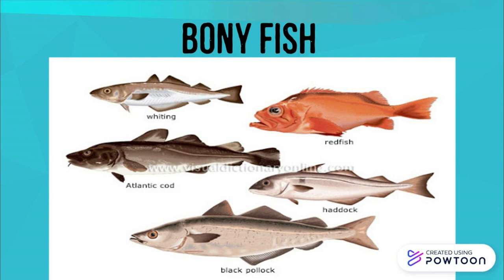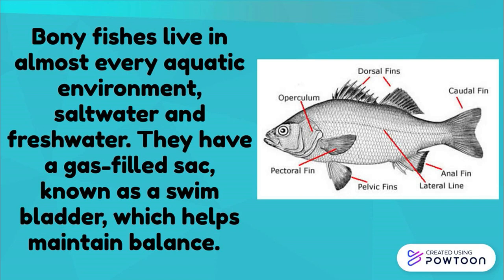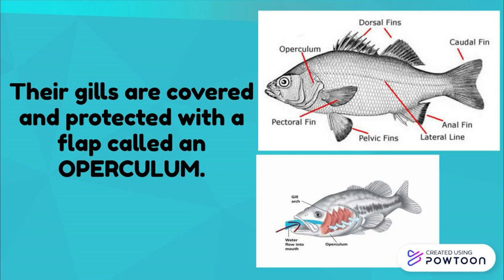Bony fish are the most diverse of the fish groups. Most familiar fishes belong to this group, such as milkfish, tilapia, and salmon. Bony fishes live in almost every aquatic environment — both saltwater and freshwater. They have a gas-filled sack known as a swim bladder, which helps maintain balance. Their gills are covered and protected with a flap called an operculum.